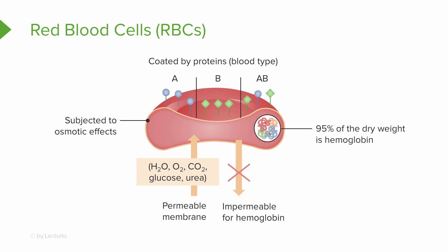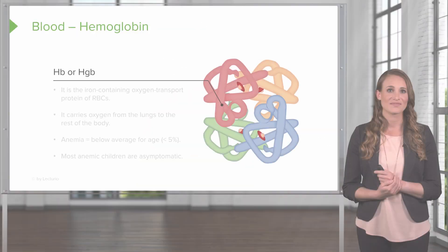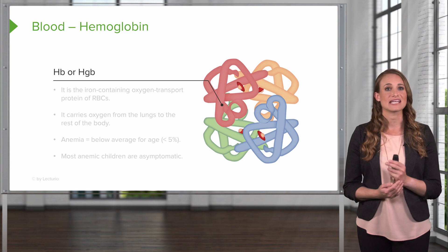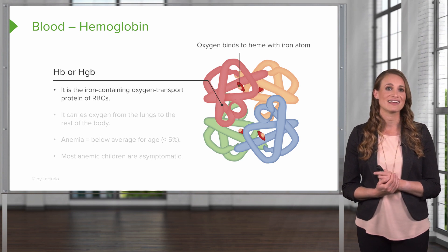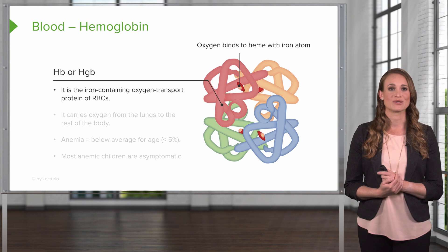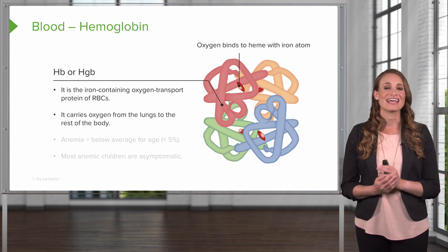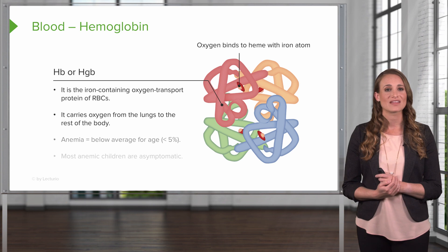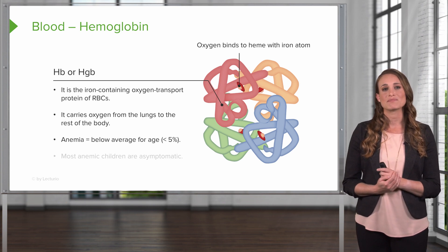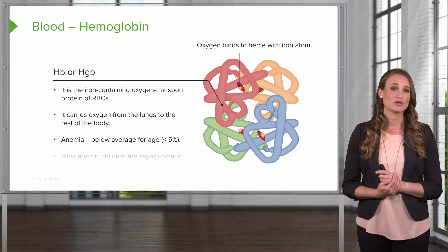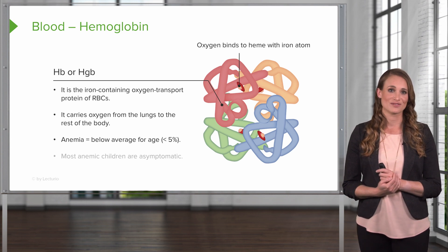95% of the dry weight of a red blood cell is hemoglobin. Hemoglobin, abbreviated as HB or HGB, is the iron-containing oxygen transport protein on a red blood cell. It carries oxygen from the lungs to the rest of the body. Anemia is defined as a patient who has a less than fifth percentile normal hemoglobin level based on age. Most anemic children are asymptomatic.